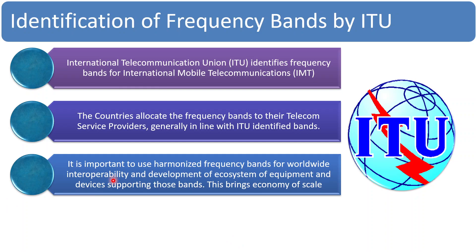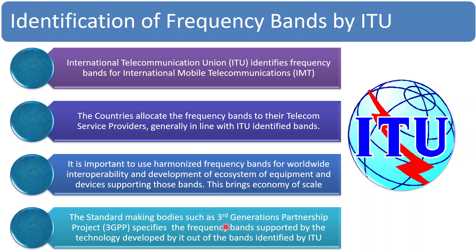Worldwide interoperability and development of an ecosystem of equipment and devices supporting those bands brings economy of scale. The standard-making body, such as the Third Generation Partnership Project 3GPP, specifies the frequency bands supported by the technology it develops — for 2G, 3G, 4G, or 5G — out of the bands identified by ITU. Not all the bands identified by ITU will be utilized at once; the technology will evolve and those frequency bands will be used accordingly.